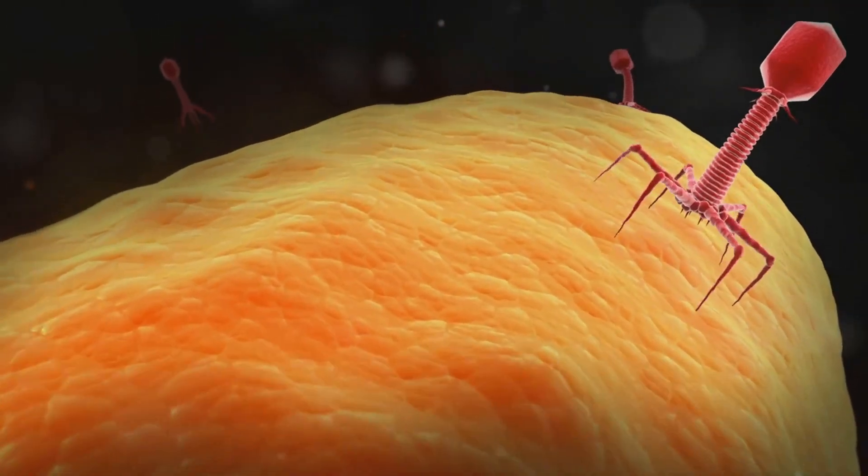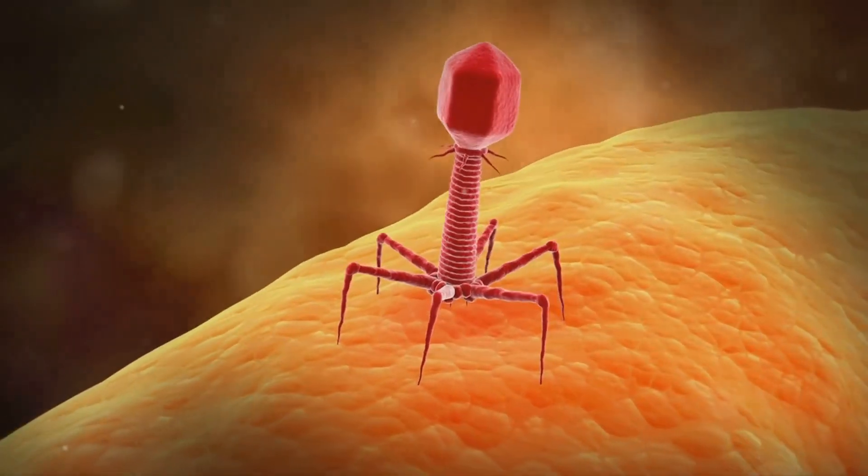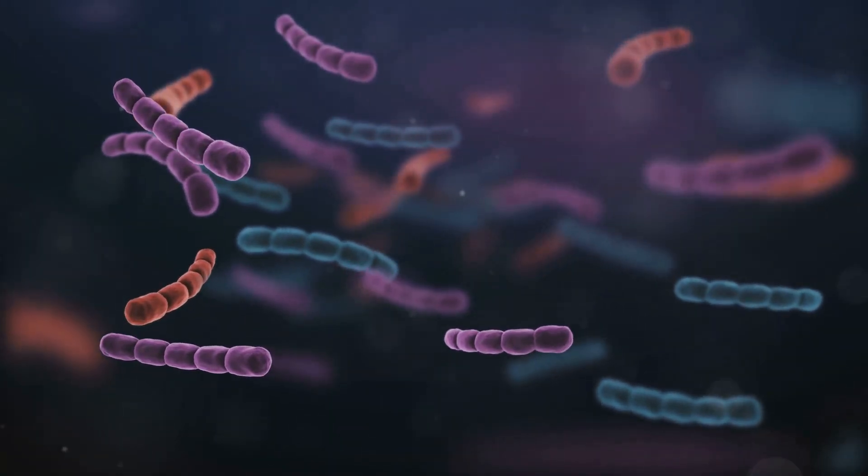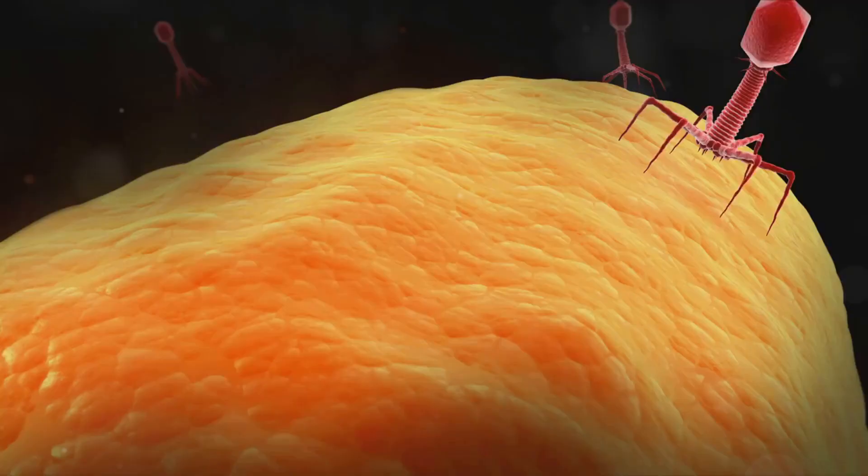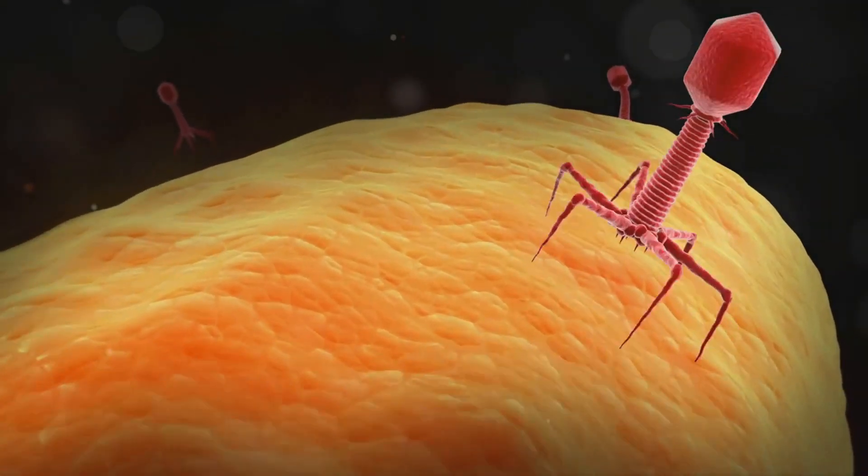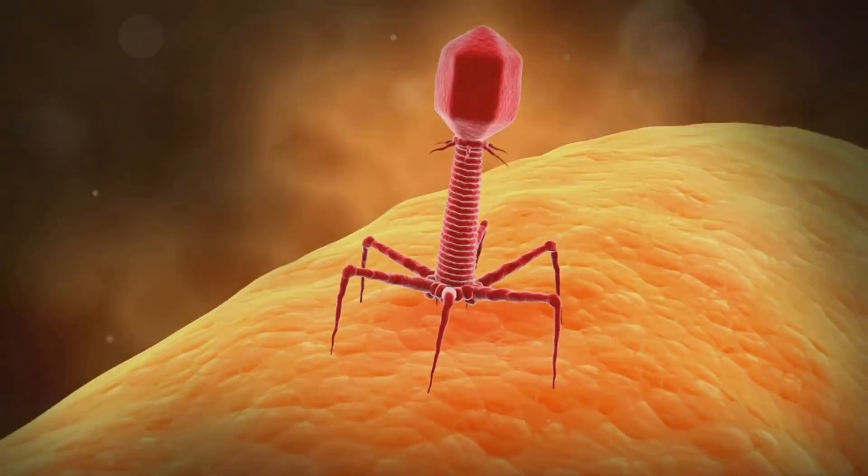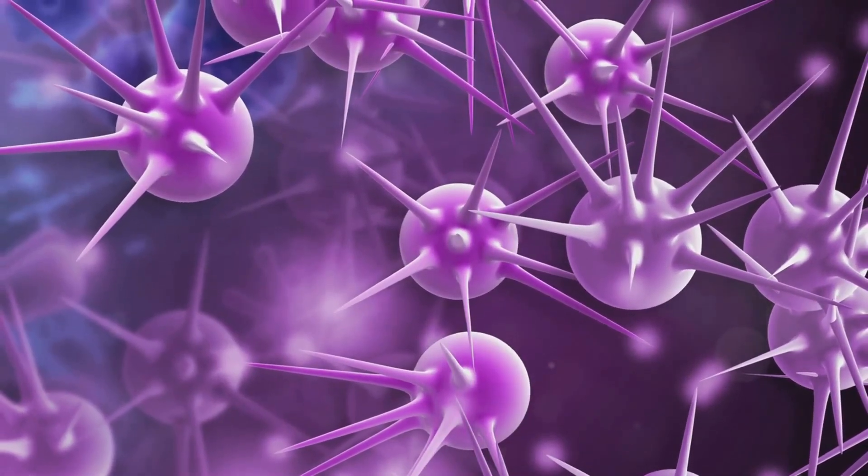One way gut bacteria contribute to immune function is by competing with pathogens for resources and attachment sites in the gut. This competitive exclusion helps prevent harmful bacteria from gaining a foothold and causing infection. Additionally, certain gut bacteria produce substances that directly inhibit the growth of pathogens, acting like tiny warriors protecting their territory.